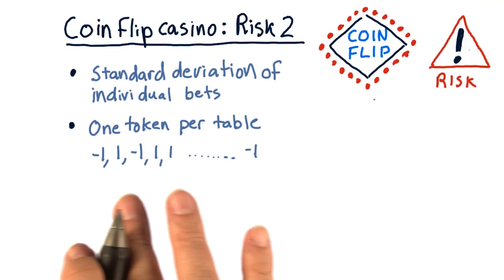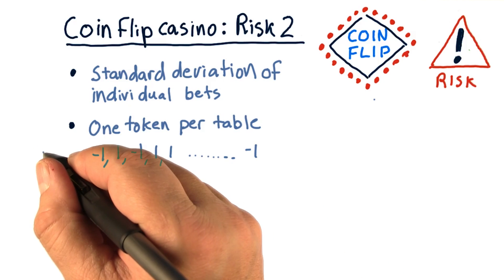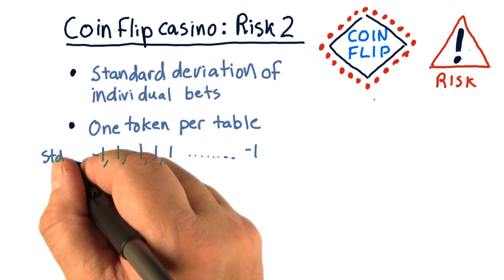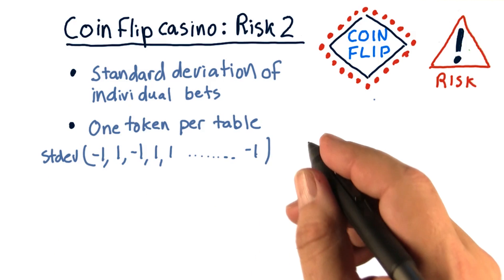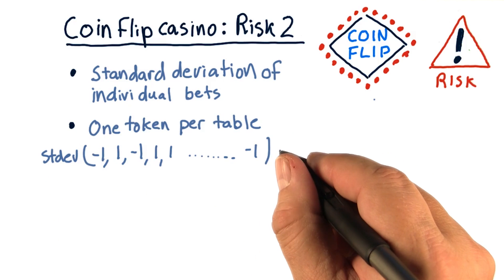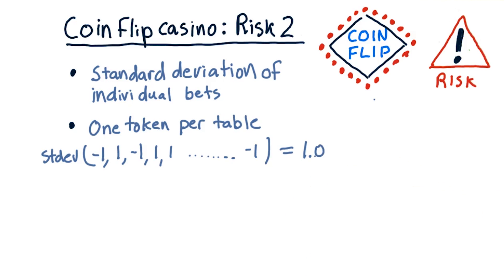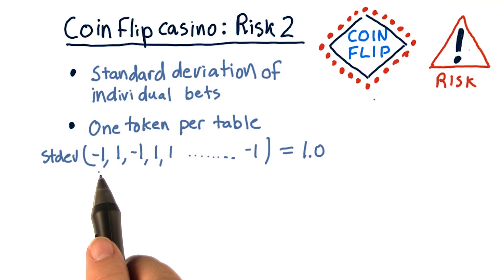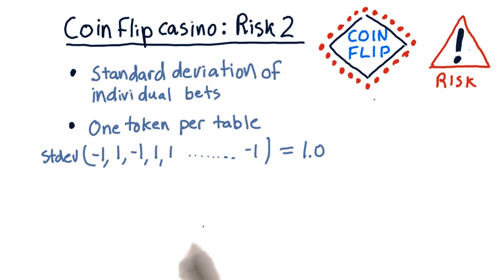Now, we don't actually have to spend much time doing the math here. It turns out that the standard deviation for this case is pretty easy to calculate. Because for each table, the result is either negative 1 or 1. And it turns out that the standard deviation in this case is easily calculated as 1.0. So it doesn't matter what the particular outcome turns out to be — we know we're either going to lose 1 or gain 1 in every single table, and so our expected standard deviation there is 1.